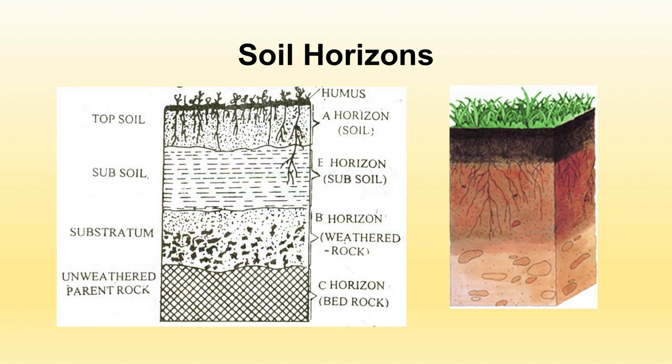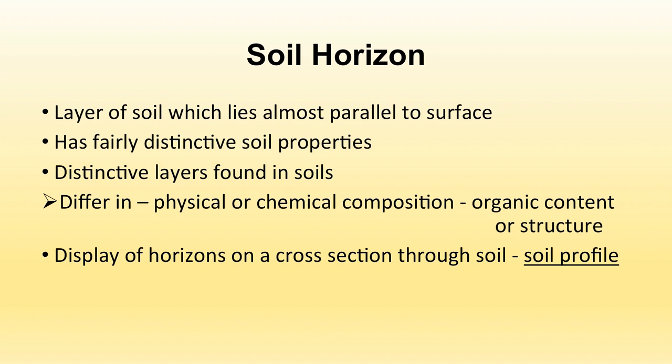The topmost layer, the A horizon, supports plant growth. Soil horizons differ in physical or chemical composition resulting from organic content or structure. The display of horizons on a cross-section through the soil is known as the soil profile. By cutting the soil cross-sectionally, the various layers become visible — this showing of layers is known as the soil profile.